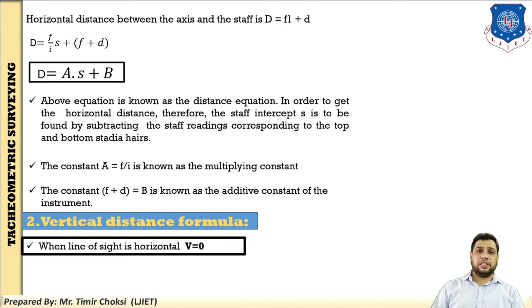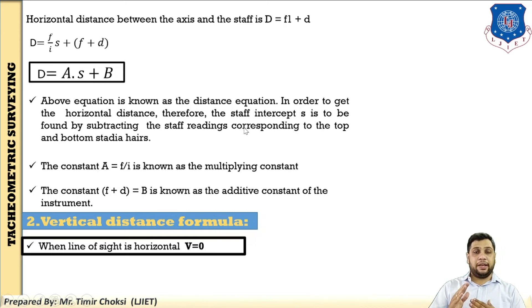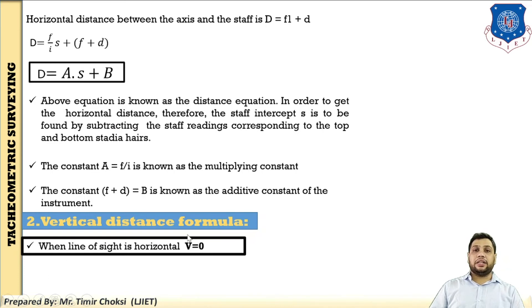So you find capital D. The most important formula is D = A×S + B, where A is the multiplying constant, B is the additive constant, and S equals the staff intercept. A is the multiplying constant and B is the additive constant. S is the staff intercept — upper reading minus lower reading.